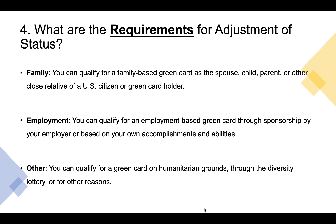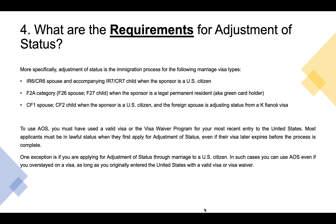More specifically, adjustment of status applies to the following marriage visa types: IR-6 or CR-6 spouse and accompanying IR-7 or CR-7 child when the sponsor is a U.S. citizen; F-2A category for F-26 spouse and F-27 child when the sponsor is a legal permanent resident; and CF-1 spouse or CF-2 child when the sponsor is a U.S. citizen and the foreign spouse is adjusting status from the K-1 visa. To use AOS, you must have used a valid visa or the visa waiver program for your most recent entry to the United States. Most applicants must be in lawful status when they first apply for adjustment of status, even if the visa later expires before the process is complete.